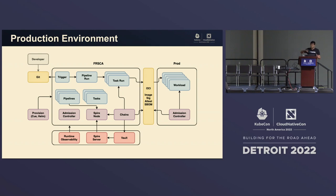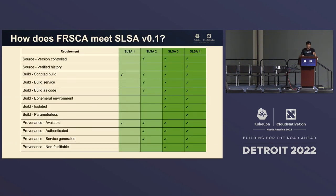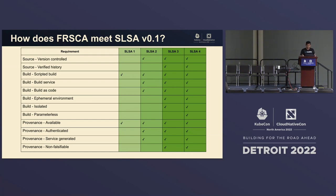Once it's in the production environment, the admission controller validates everything. Kyverno validates that the attestations were signed, attestations were created, the image was signed — all that data needed to confirm this is an artifact I trust and can run in production. How does Fresca meet SALSA? At least SALSA v0.1 — SALSA version one is coming out soon and some requirements may change. SALSA levels one, two, and three are met, especially non-falsifiable provenance. SALSA four is project-specific, but if the environment meets the criteria, Fresca can achieve SALSA level four as well.